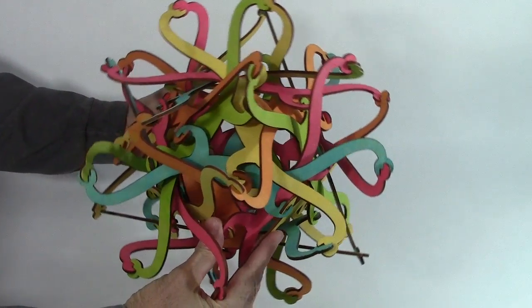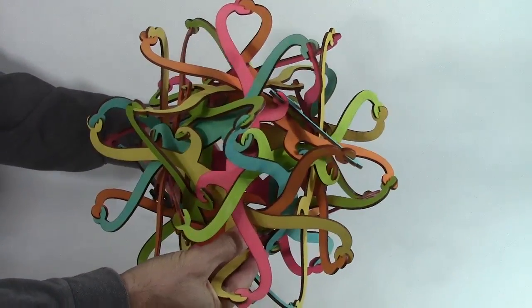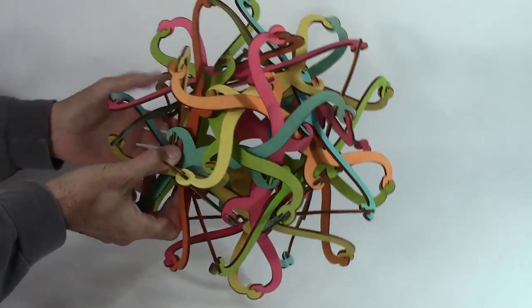It turns out that of the 24 possible cyclic orderings of five colors, the 12 that appear around these 12 openings in the sculpture are just the 12 even permutations of each other.